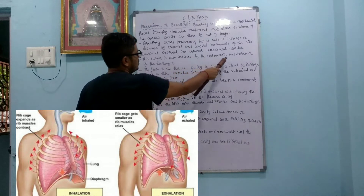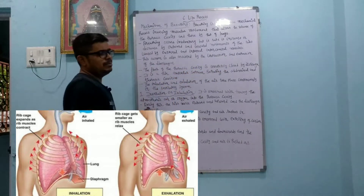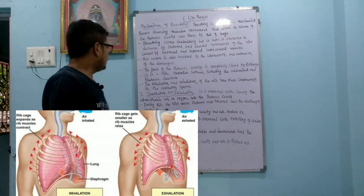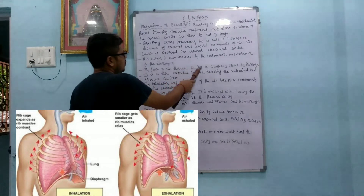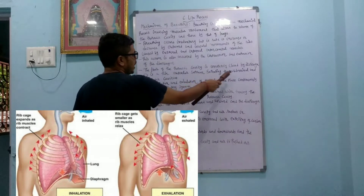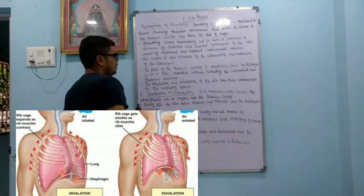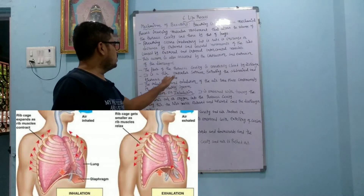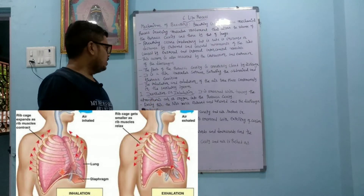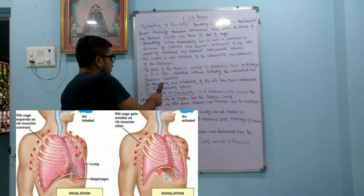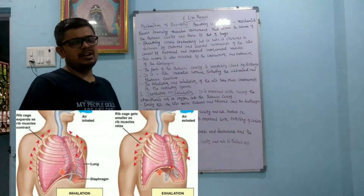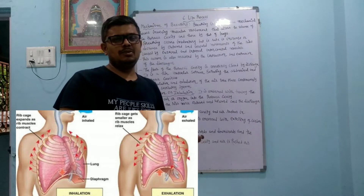This action is also assisted by the contraction and expansion of the diaphragm. The floor of the thoracic cavity is completely closed by the diaphragm. The diaphragm is a thin muscular septum separating the abdominal and the thoracic cavity. The inhalation and exhalation of air take place continuously in the respiratory system.